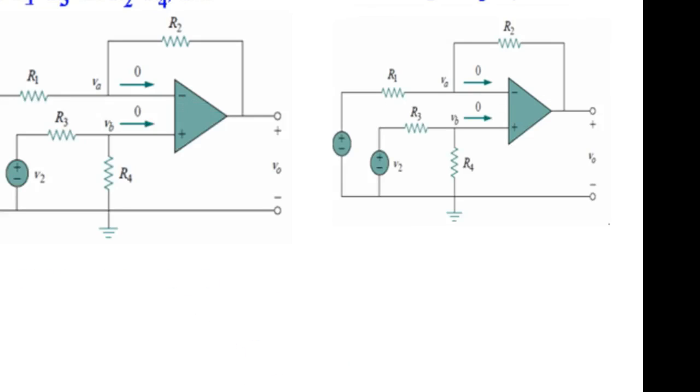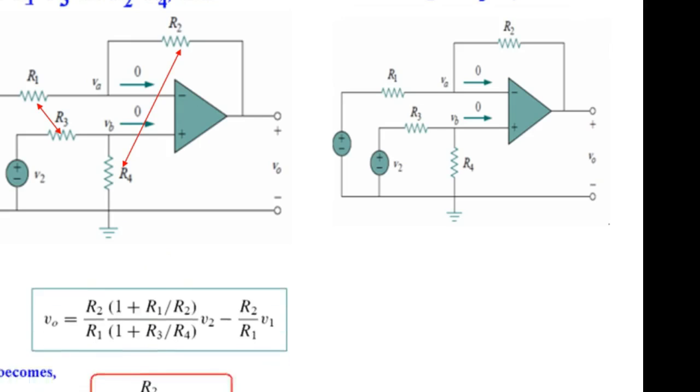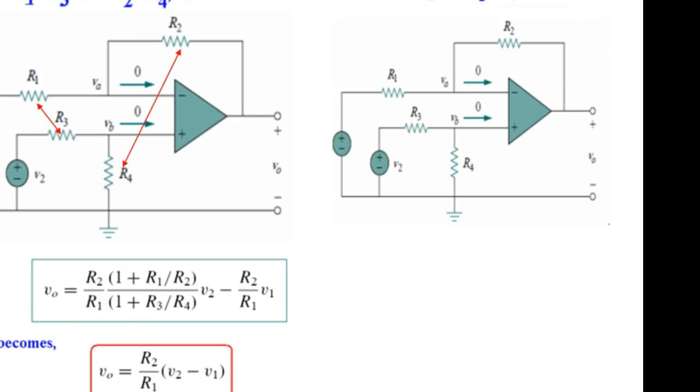Now, some interesting things if you note, if we make R1 is equal to R3. So, R1 and R3 we make same. And similarly, if we make R2 and R4 same. So, in the formula we put,